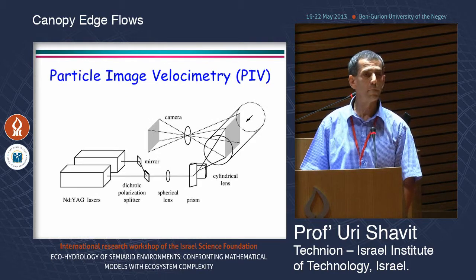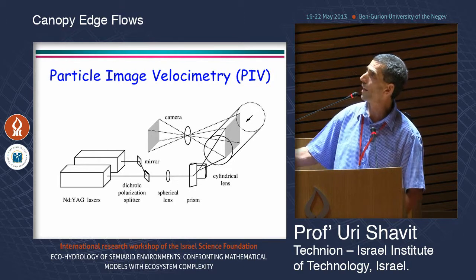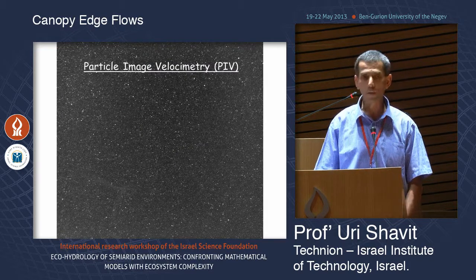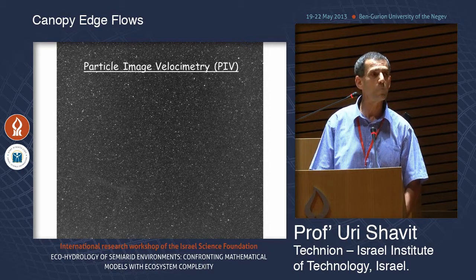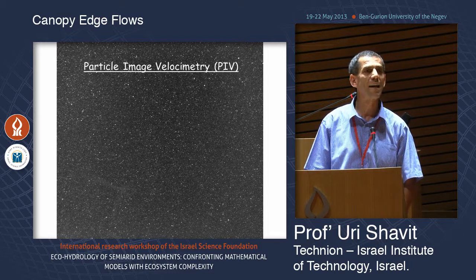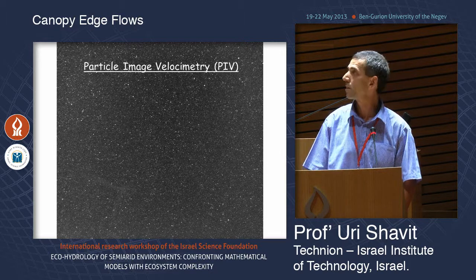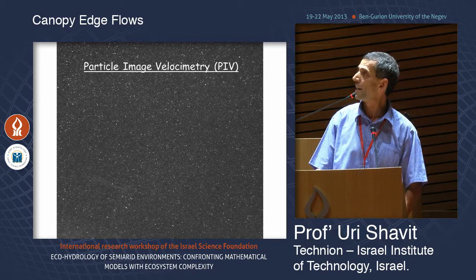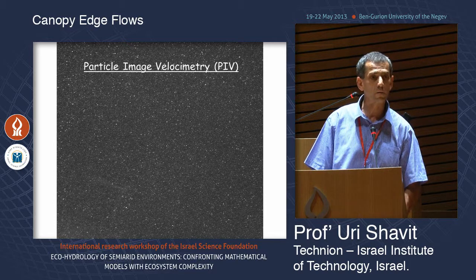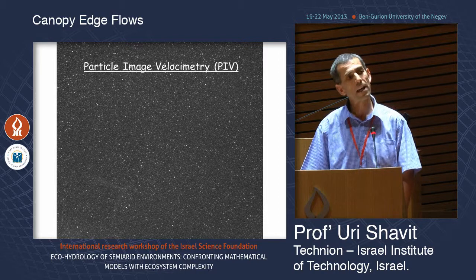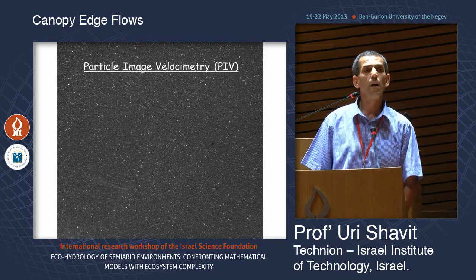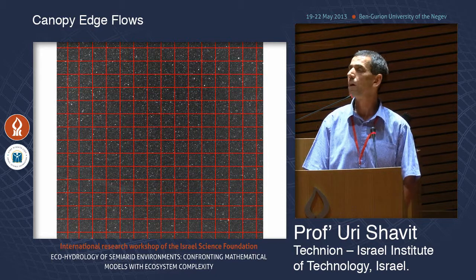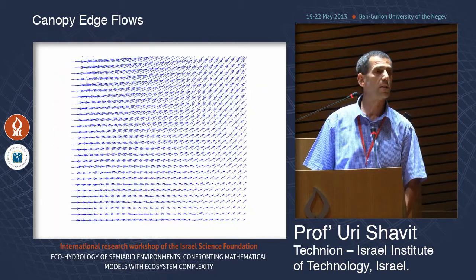To do that we use PIV — particle image velocimetry — made of two lasers, optics, and a camera. We see the flow with tiny particles; there are many, many particles visible, producing what looks like a dark night sky with many white spots. We take image pairs going back and forth with two lasers. The analysis produces a vector at every location — in this case a two-component vector: U in the X direction and W in the Z direction. We create interrogation areas, with something like 5,500 such squares in a real image, and generate the full flow field.